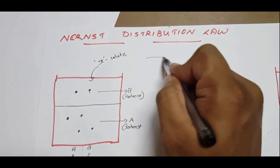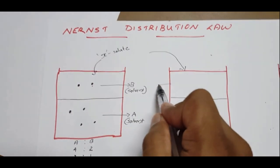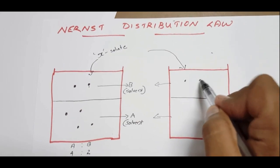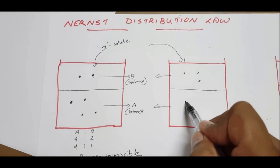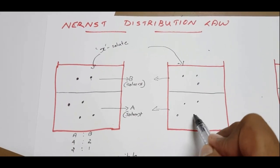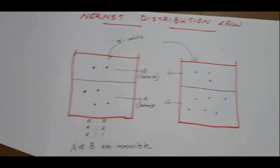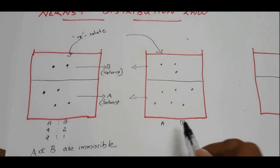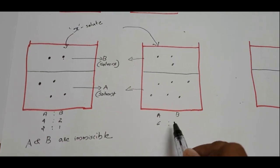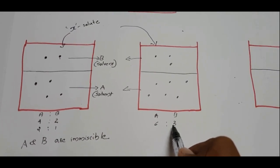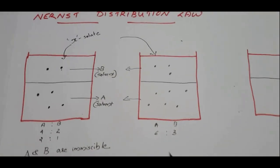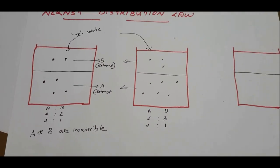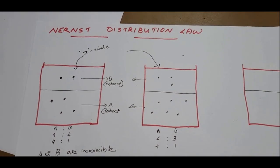Consider another system. If you add X to this particular system — here solvent B and here solvent A — the ratio is: 1, 2, 3, 4, 5, 6 solute molecules. In solvent A the solute molecules are 6, and in solvent B the solute molecules are 3. So it forms a particular concentration ratio of 2 is to 1.